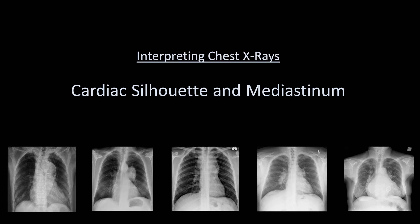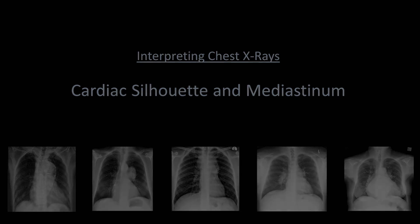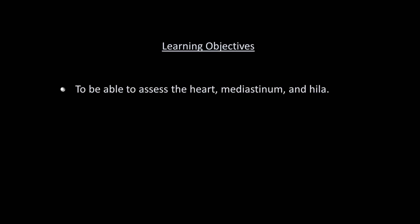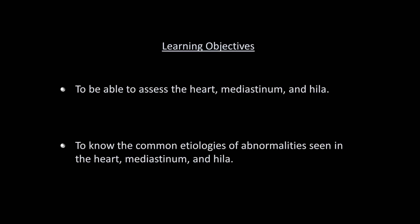This is the fifth video in this series on how to interpret a chest x-ray, and the topic is the cardiac silhouette and mediastinum. The learning objectives are to be able to assess those structures on x-ray and to know the common etiologies of abnormalities seen in them.